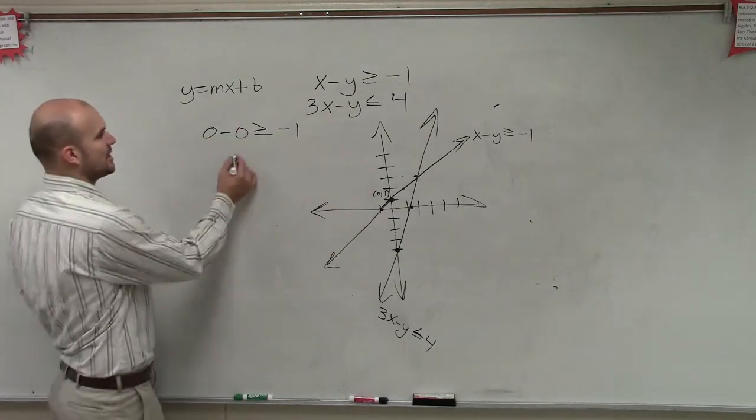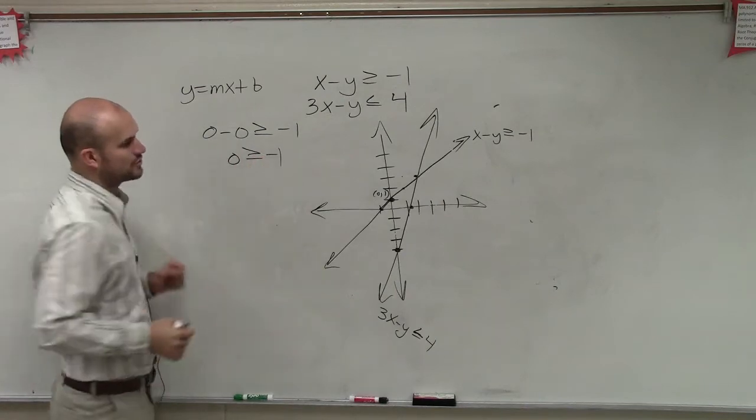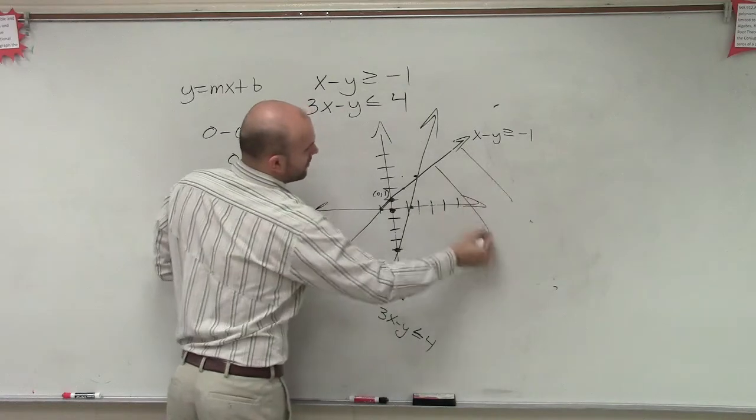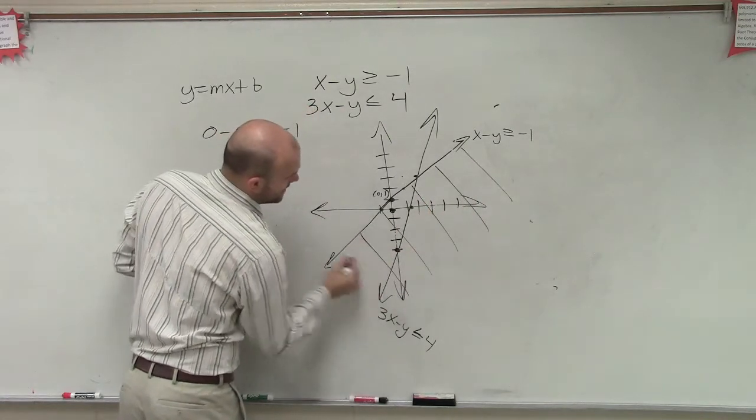All right, so for this one, when I test 0, 0, I say 0 is greater than or equal to negative 1. True or false? True. So since it's below my line, that means all points are true below that line.